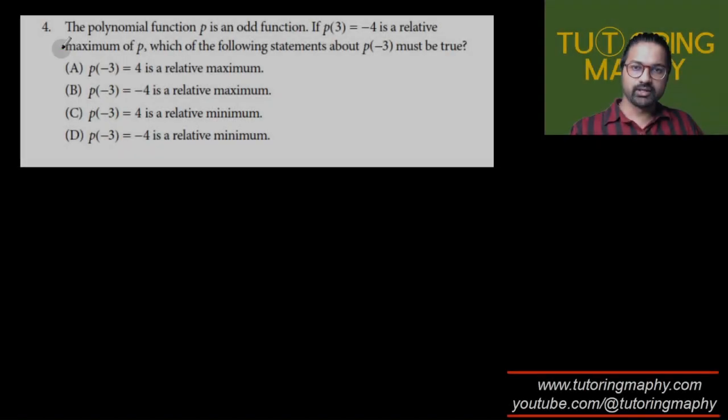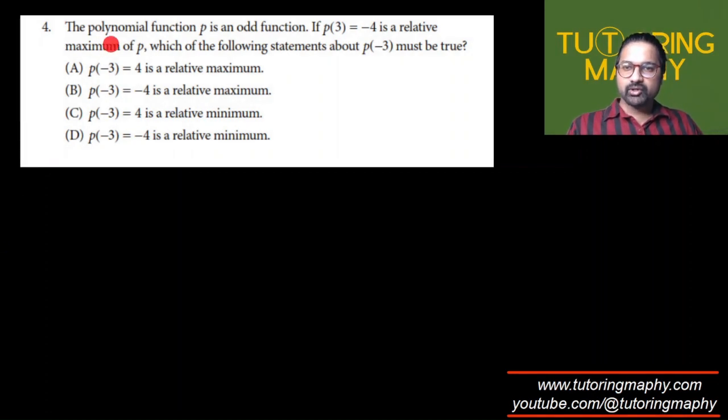About the next question, this one says that the polynomial function p is an odd function, and p(3) = -4 is a relative maxima of p. Which of the following statements about p(-3) must be true?